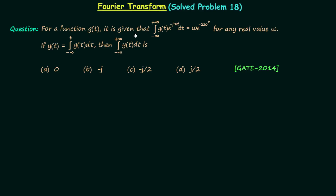For a function g(t), it is given that the integration from minus infinity to plus infinity of g(t)·e^(-jωt) dt equals ω·e^(-2ω²) for any real value ω. So we can say that the time domain signal g(t) has a Fourier transform equal to ω·e^(-2ω²). Let's say g(t) has the Fourier transform equal to G(ω).